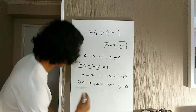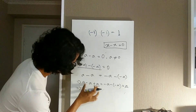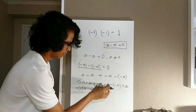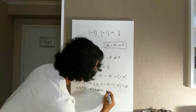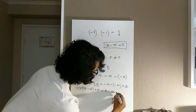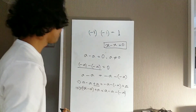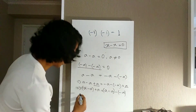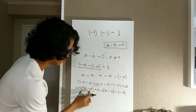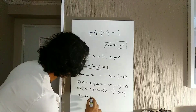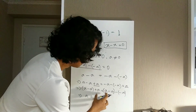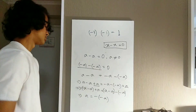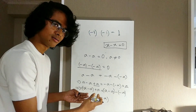Now I'm going to rearrange. On the left side: a minus a plus a. On the right side, I'll write a first, then the remaining two terms: minus a minus minus a. Because a minus a equals 0, those terms vanish. On the right side similarly, that part is also zero and vanishes. So we get: a equals minus minus a.